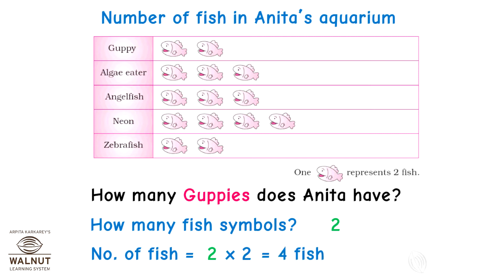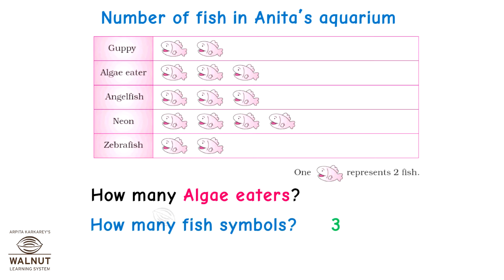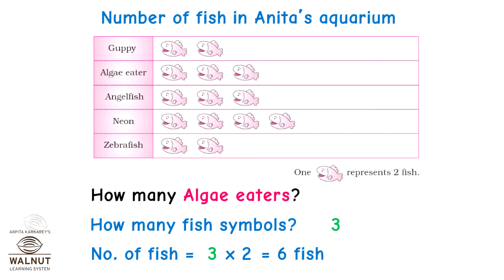How many algae eaters does Anita have? See carefully — there are three fish symbols for algae eater fish in the table, so Anita must have 3 into 2 equal to six fish of this type in the aquarium.